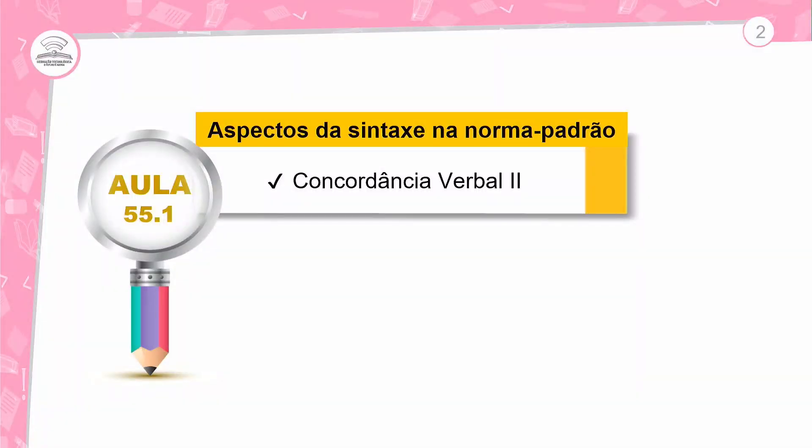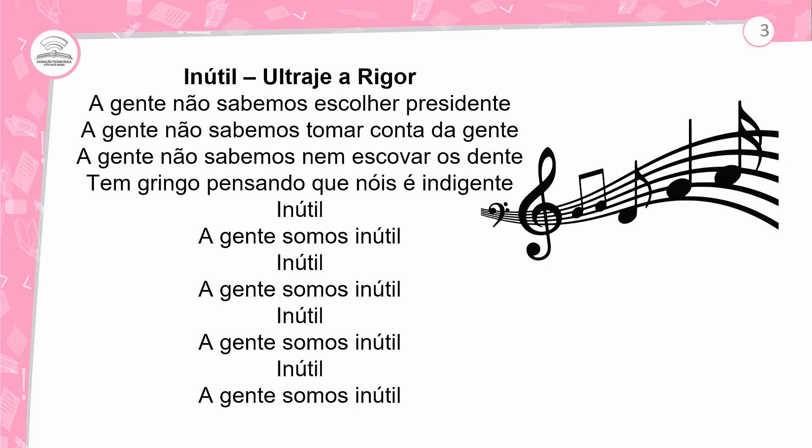Aula 55.1, concordância verbal, parte 2. Sempre a gente começa com o texto. Olha lá: 'A gente não sabemos escolher presidente. A gente não sabemos tomar conta da gente. A gente não sabemos nem escovar os dentes. Tem gringo pensando que nós é indigente. A gente somos inútil!'